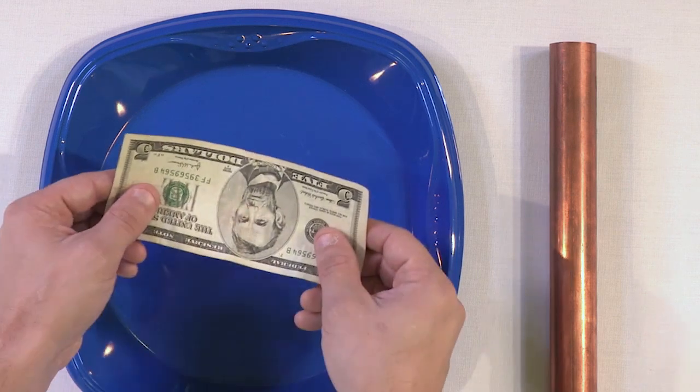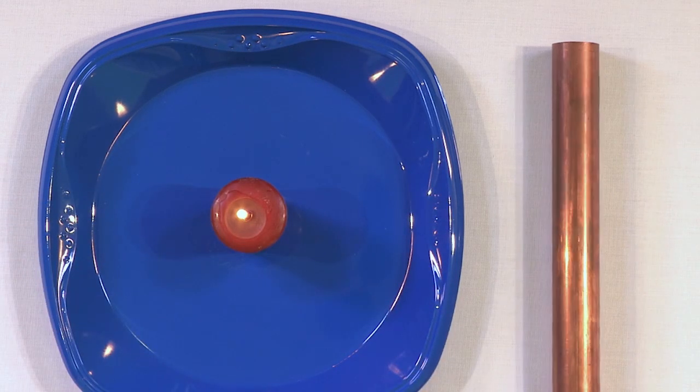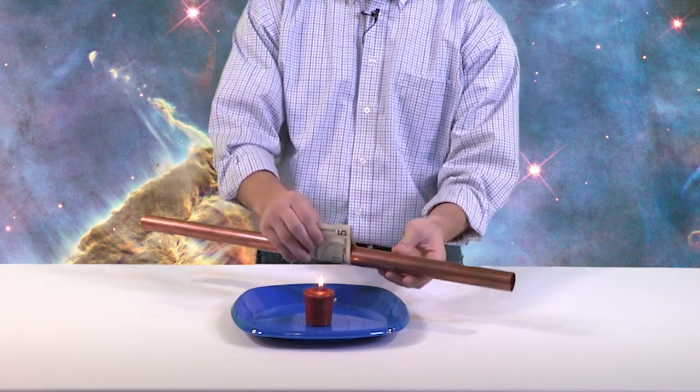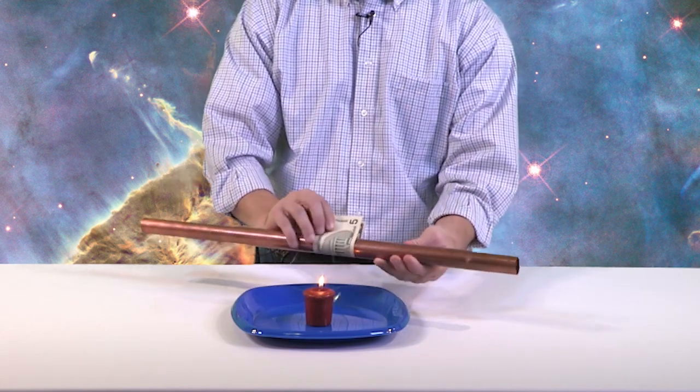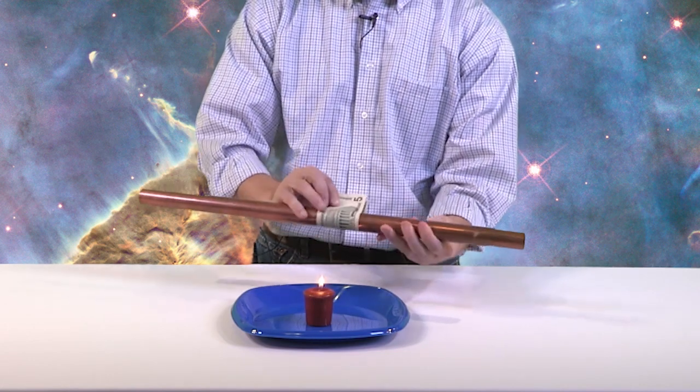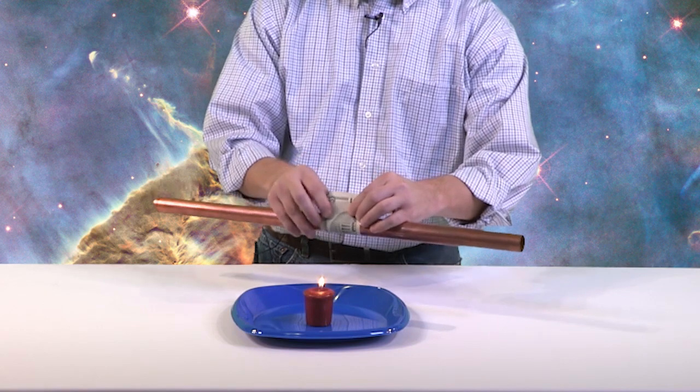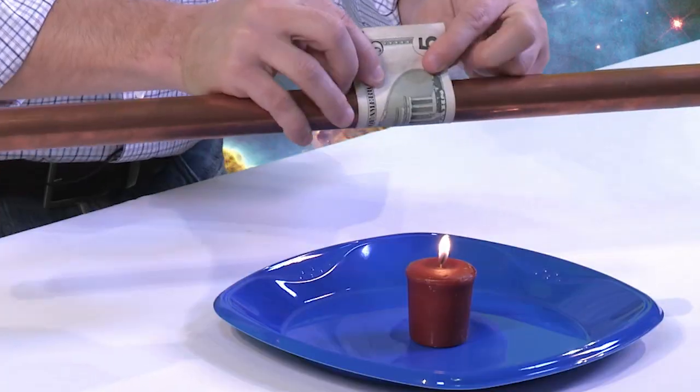But we're not just going to place it right on top like that. We're going to actually take this copper pipe and we're going to wrap this piece of money directly around like this. So we're just wrapping it around, nothing special. And then what we're going to do is hold this candle flame directly on top of this money.